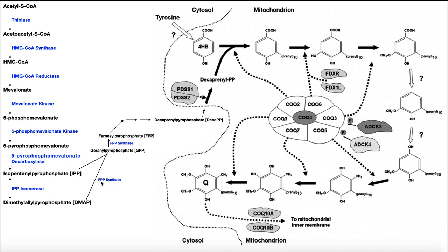FPP synthase — farnesyl pyrophosphate synthase — condenses one IPP and one DMAP to make the larger isoprenoid geranyl pyrophosphate, or GPP. Then FPP synthase creates farnesyl pyrophosphate, or FPP, from GPP. It's at farnesyl pyrophosphate that we see a big branch point in metabolism: we can either continue along this pathway toward coenzyme Q, or farnesyl pyrophosphate can continue through a different pathway via squalene synthase to make cholesterol.